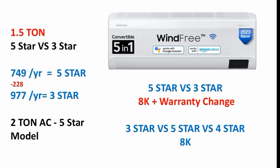Samsung has launched the 1.5-ton AC in both 3-star and 5-star variants. The difference between these two ACs is mainly the energy consumption. The difference is 228 units per year. If you look at the electricity price per unit, the 5-star AC consumes significantly less power — making it the best option for energy saving.